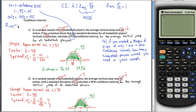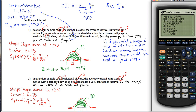You can get that using the inverse norm function on your calculator. For inverse norm, you always want to tell it the area below. So if 2.5% is the percentage above, 97.5% is the percentage below, so you enter 0.975. With z-scores, we always want our mean to be 0 and our standard deviation to be 1. It's under distributions, then the third one down, inverse norm. You enter 0.975, mean 0, standard deviation 1, hit enter, and you get about 1.96.